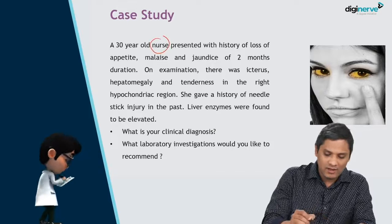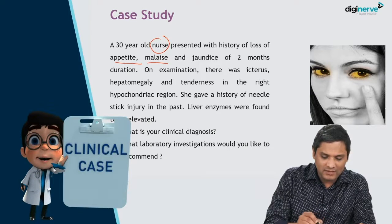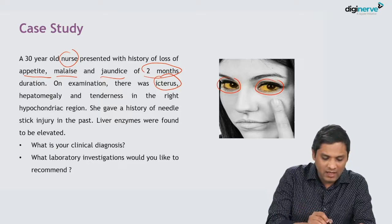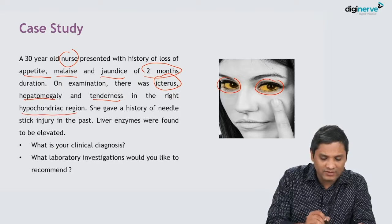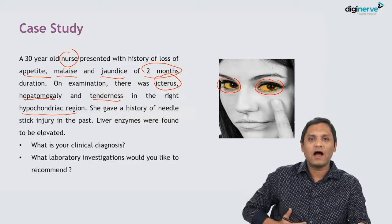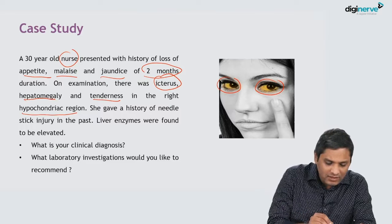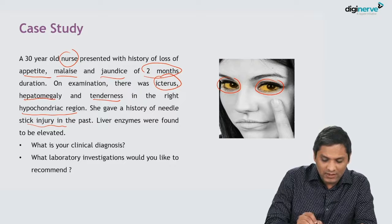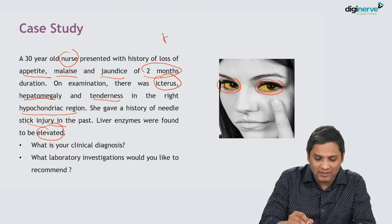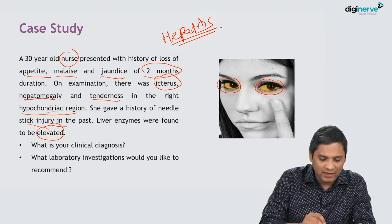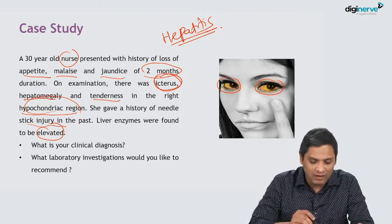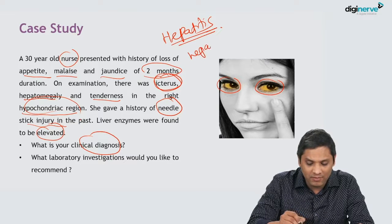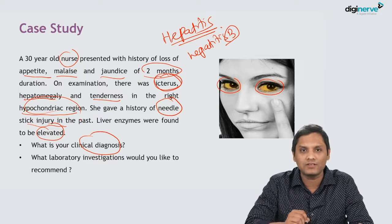It is a case of a 30-year-old nurse presented with history of loss of appetite, malaise, and jaundice for the past 2 months. On examination there was icterus on eyes, yellow color conjunctiva, hepatomegaly, and tenderness in the right hypochondriac region, which is where the liver is placed. She gave a history of needle prick injury in the past, which may be a mode of transmission. Liver enzymes were elevated — a typical case of hepatitis. The needle prick history points towards hepatitis B, the most common virus transmitted through needle prick injury.